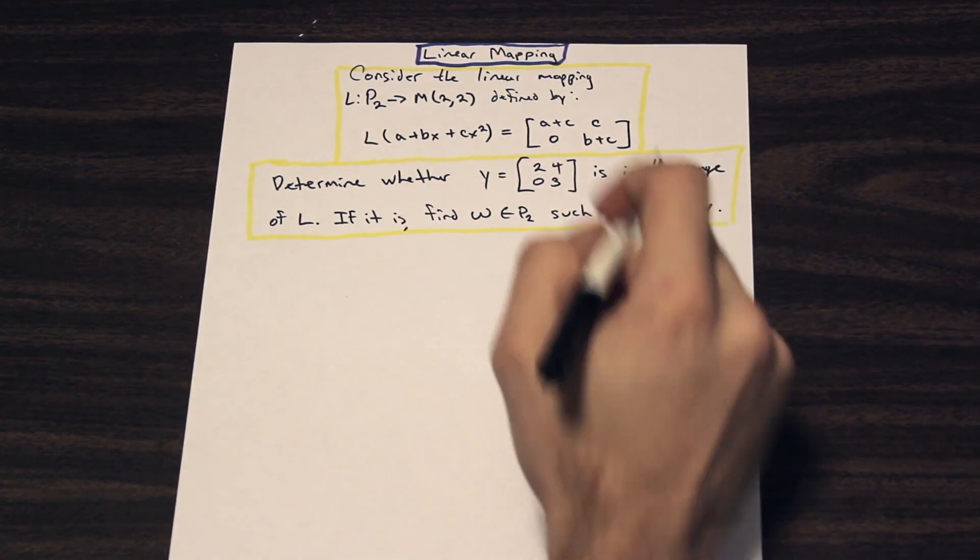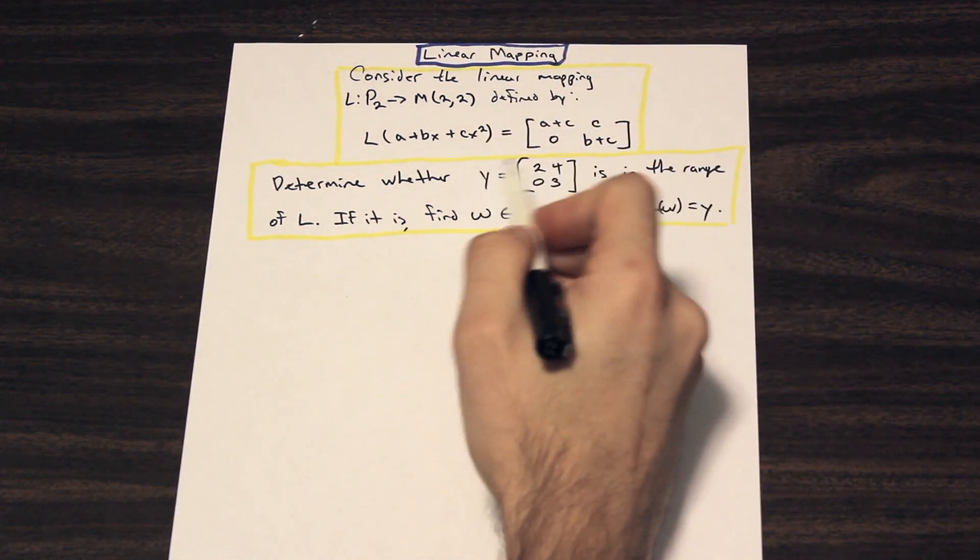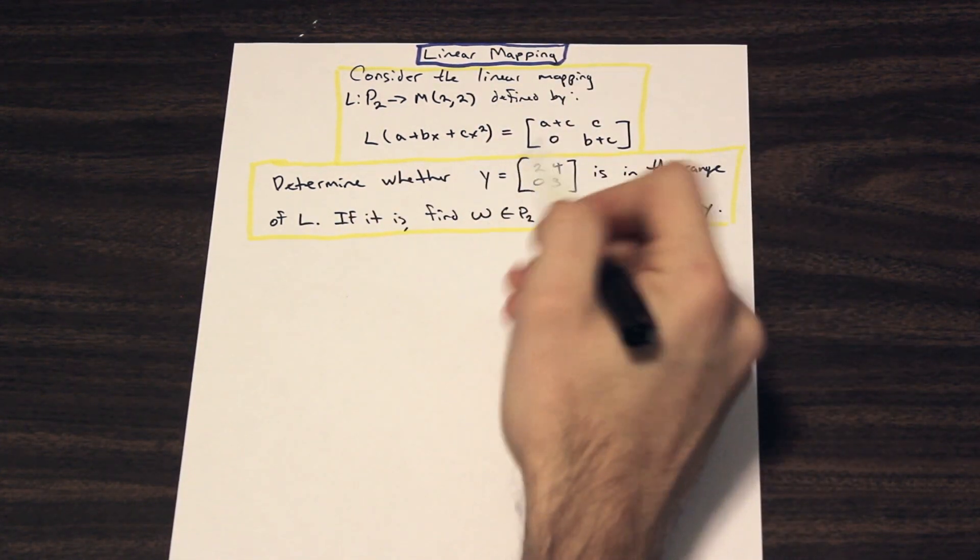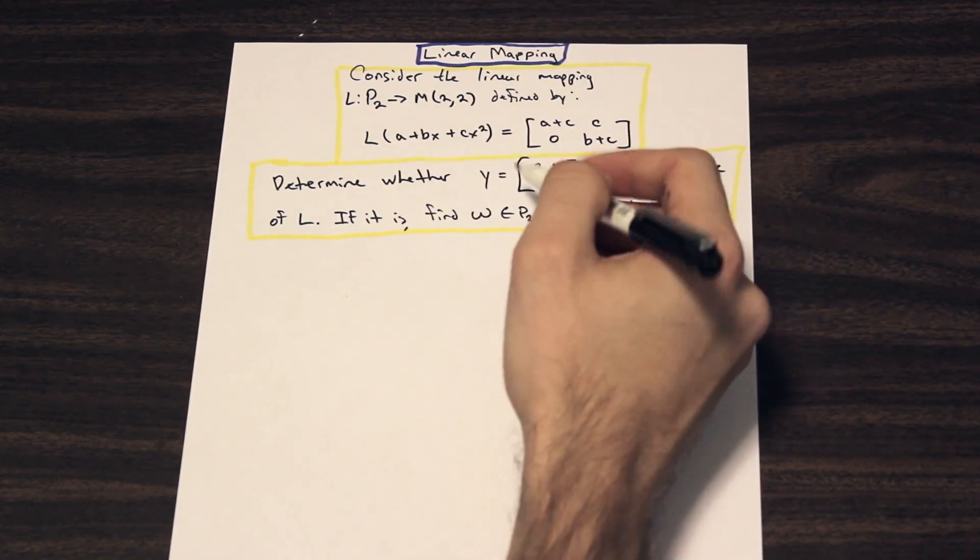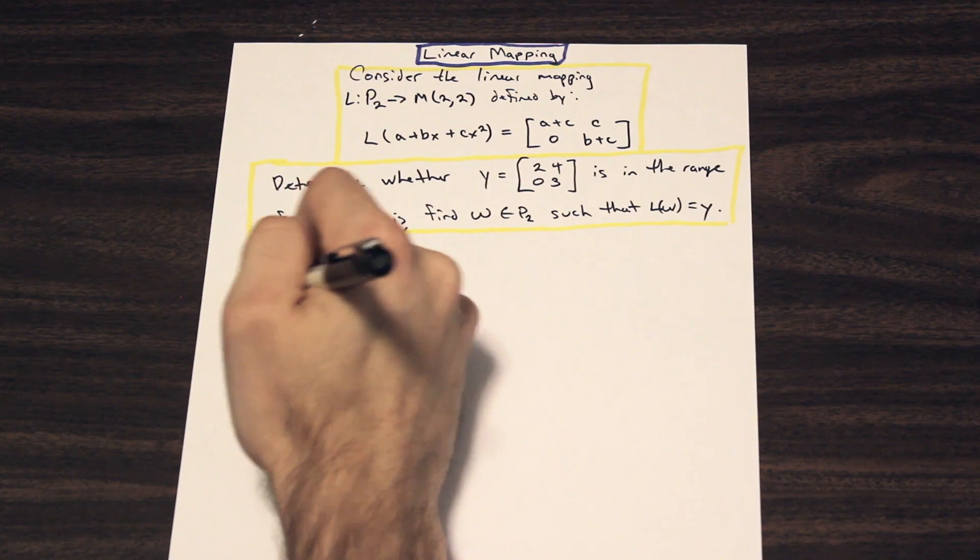So what are we going to do first? Well, we have our matrix here with the letter variables in it, and we're asked to determine whether Y is in the range of L. So what we're going to do is we're going to equate these two matrices to each other. That's our first step.